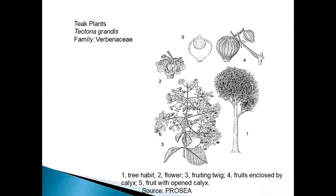This wood — that is Teak or Segun — is moderately hard, very durable, strong, not easily split, and shows no cracking, shrinking, or alteration of shape after seasoning. This is very important for its great durability. Most importantly, this wood shows resistance to fungi.